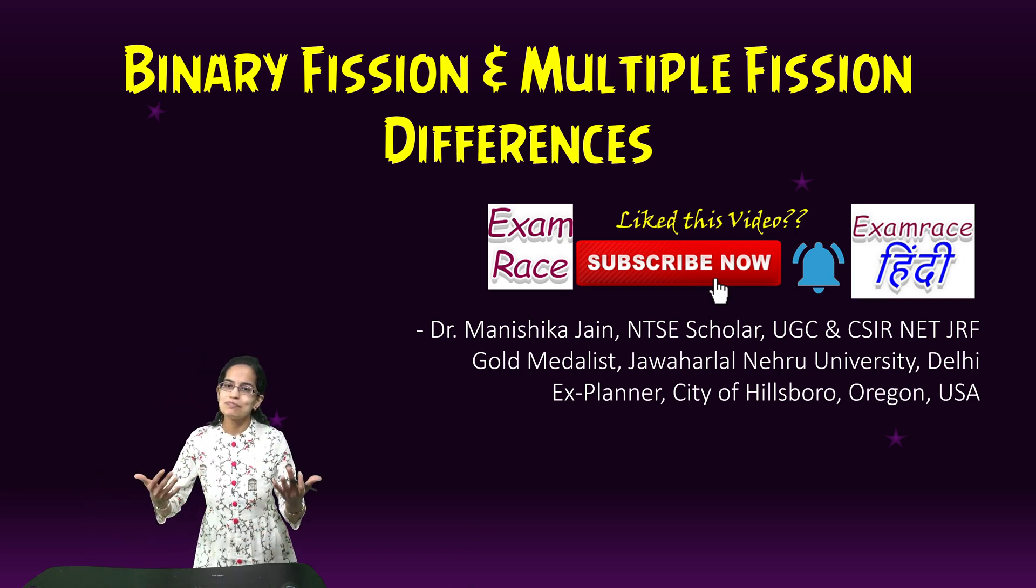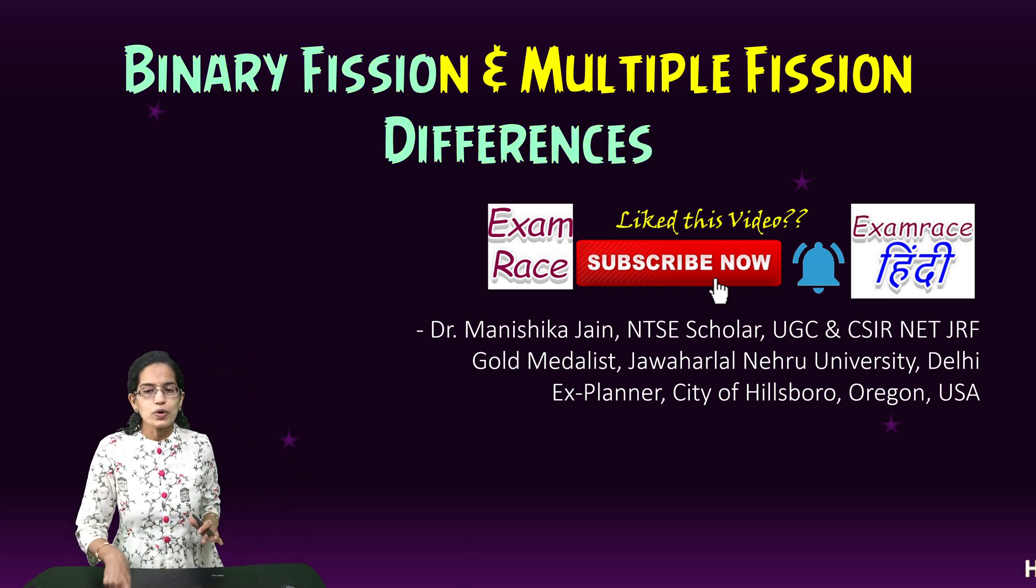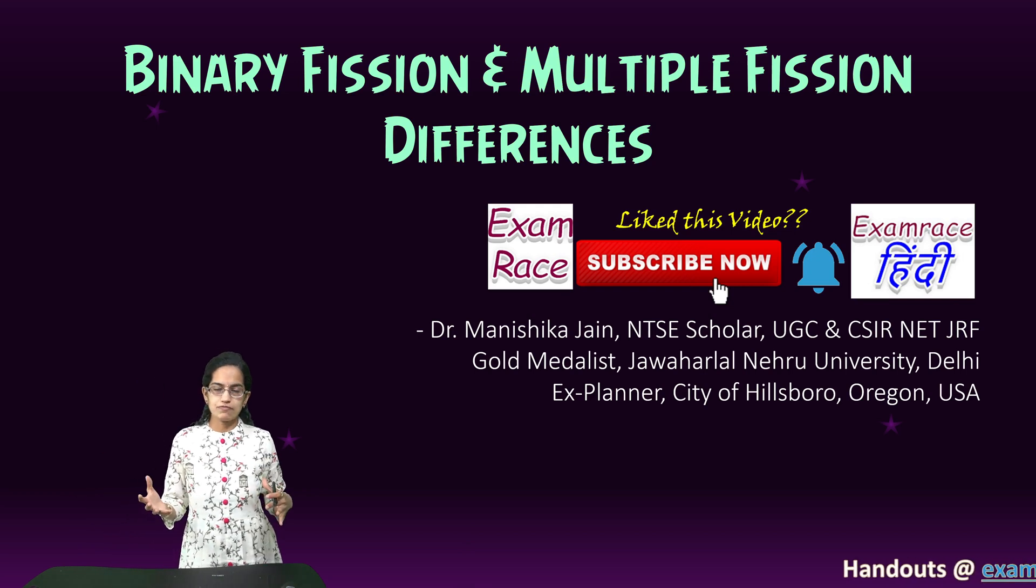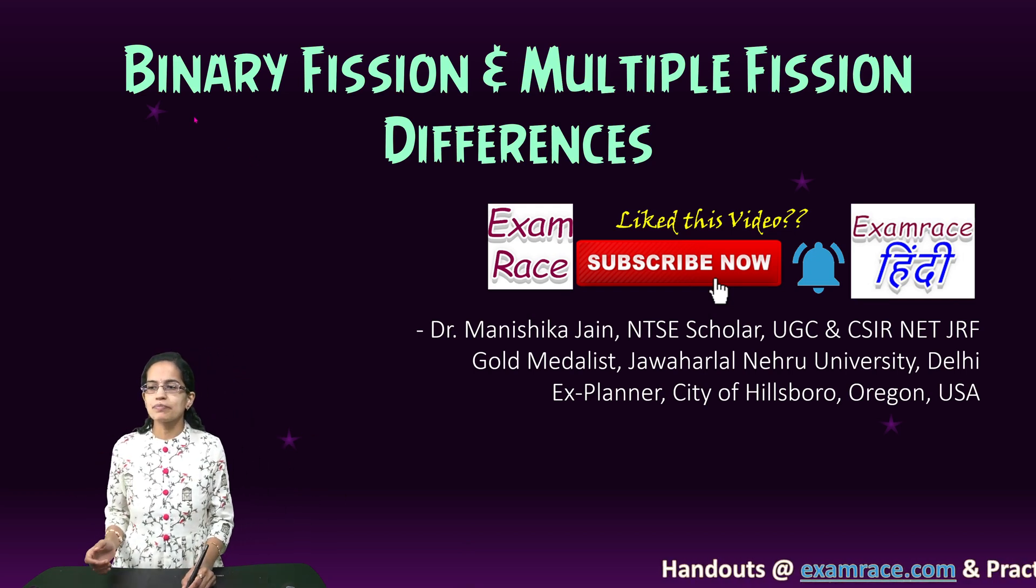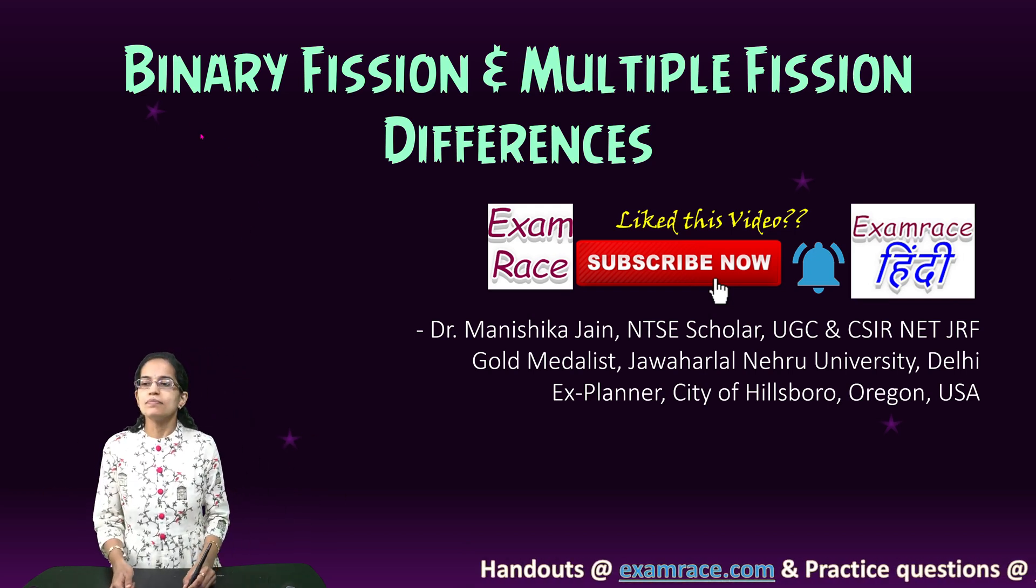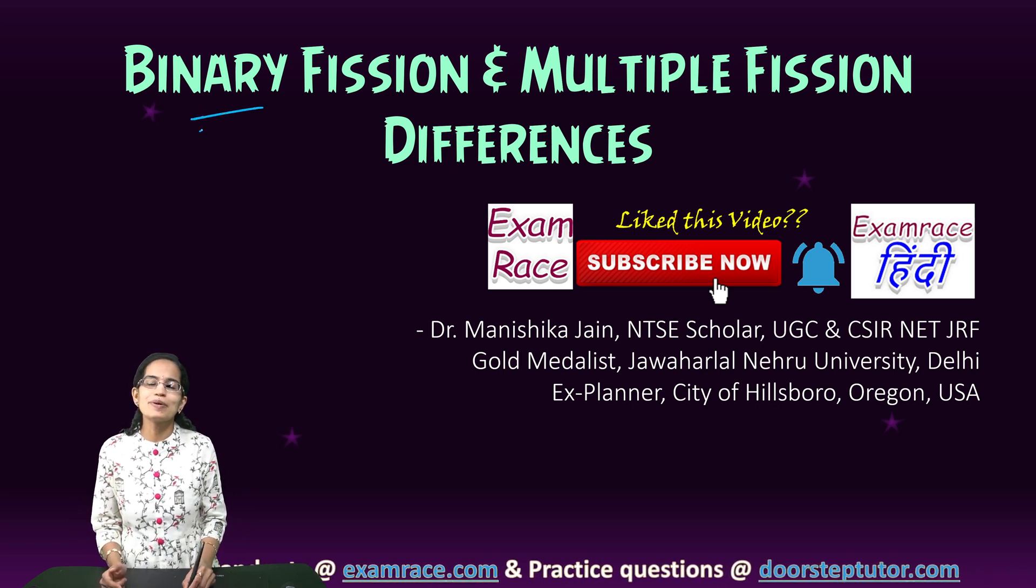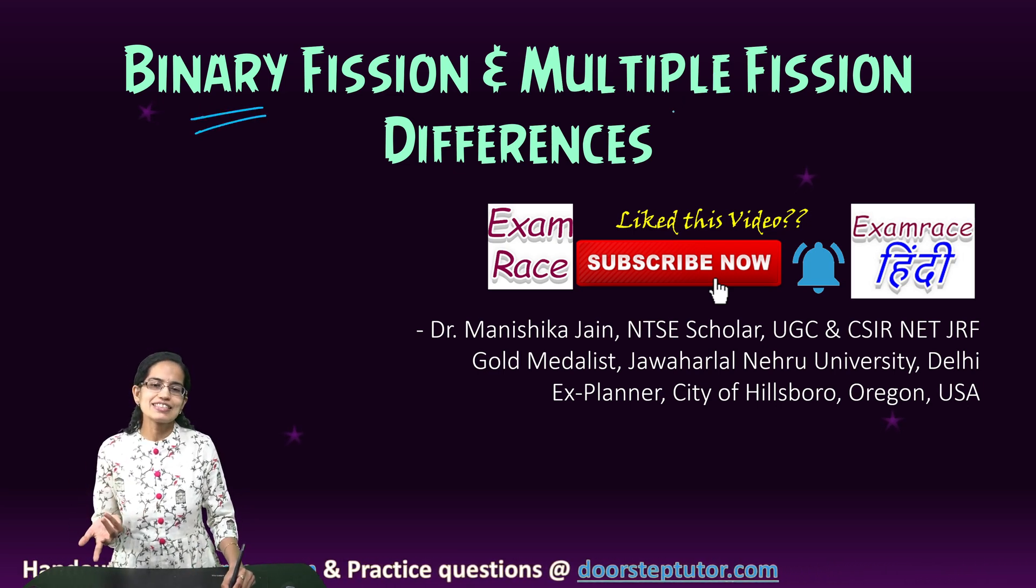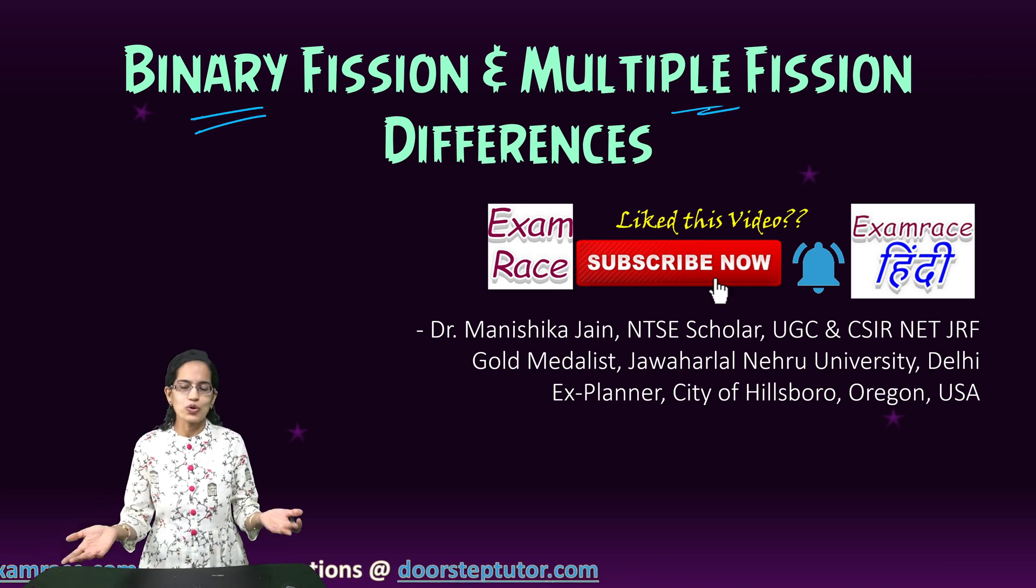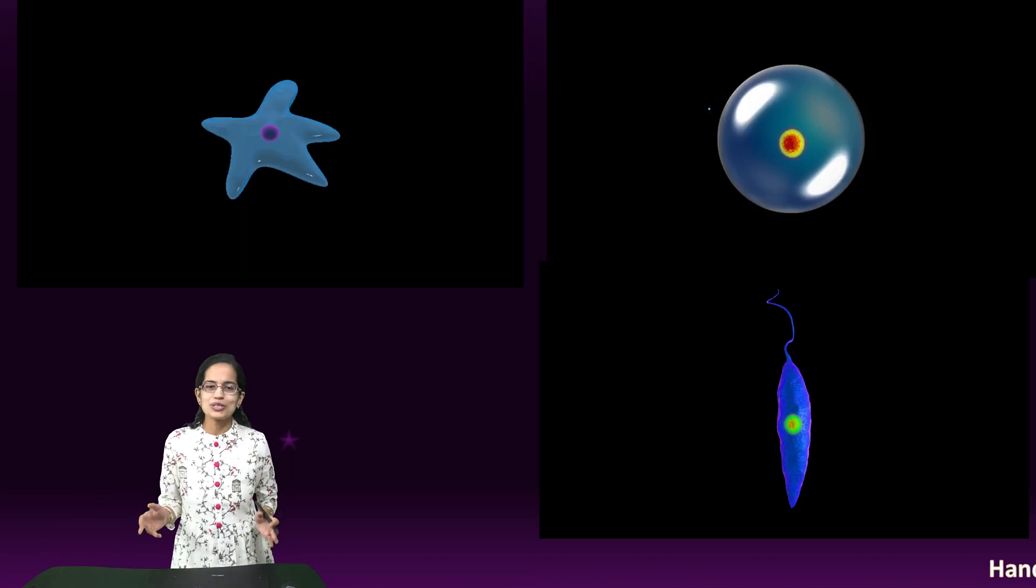Let's talk about the differences between binary and multiple fission. When we talk about binary and multiple fission, as the name suggests, binary means two. So one parent cell would produce two daughter cells, and that's the simple explanation for binary. And as the name suggests, multiple, so it's more than one. That is one of the most important differences.